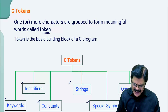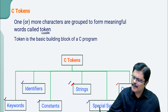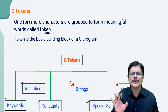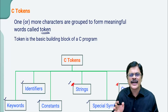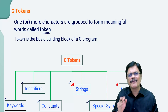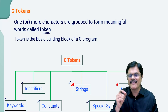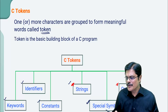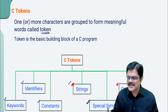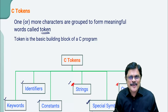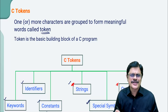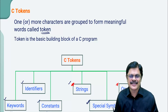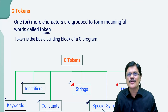Strings and operators will be discussed in more detail later on. Here we are only going to discuss about string constants, and I will just introduce what operators are. We have a separate topic for operators and expressions. In this particular topic, we are going to discuss about special symbols in the first part, constants in the second part, and keywords and identifiers in the third part.